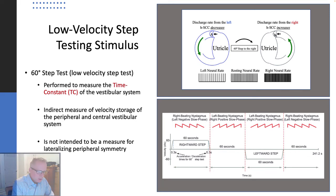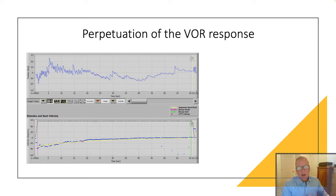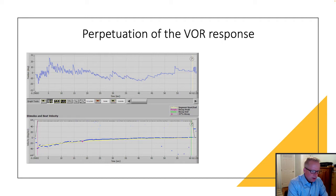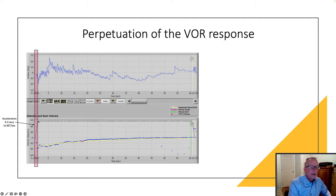Here is the output that we see from the 60 degrees per second velocity step test. Here's the acceleration point of 0.3 seconds to our target velocity of 60 degrees per second. It's during this time that the cupular mechanics deflect the cupula in one direction.